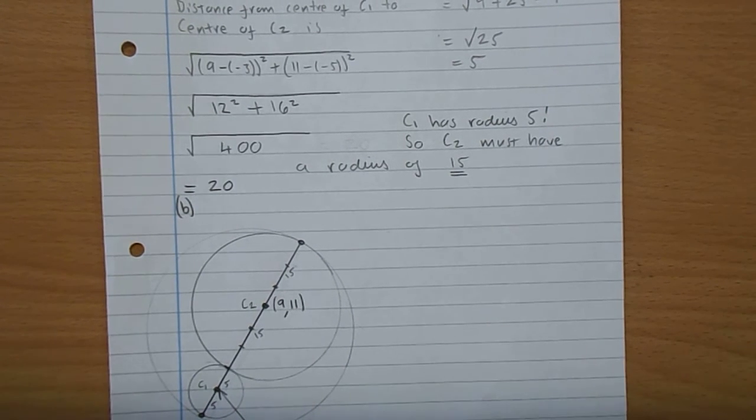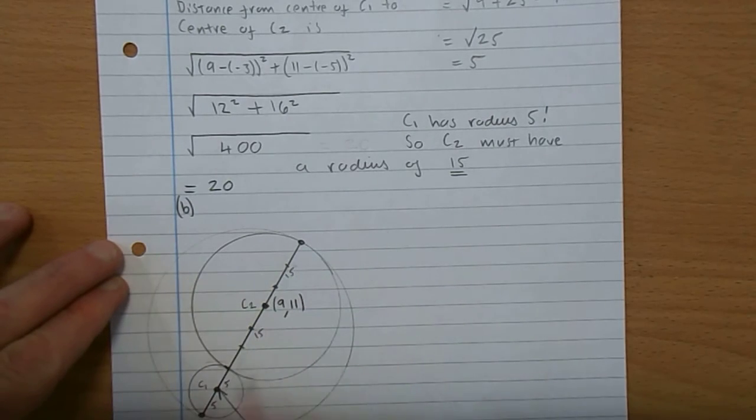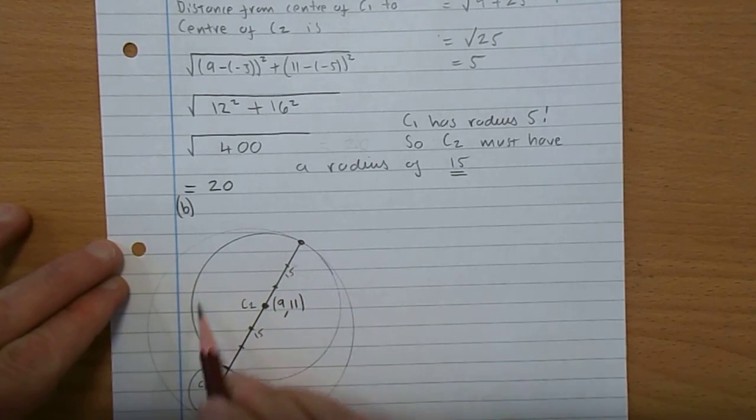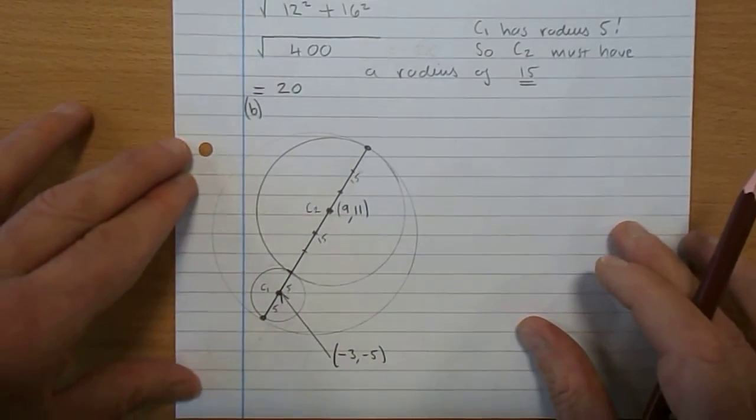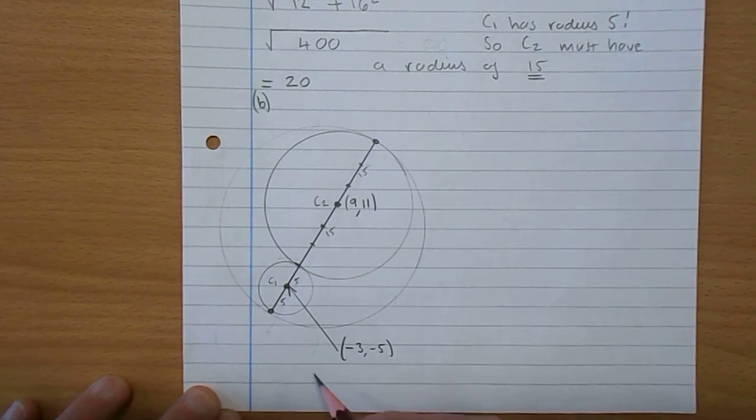Okay. Now, part B says, a third circle C3 is drawn such that both C1 and C2 touch C3 internally. That means that they touch this big circle from the inside of it. They're both inside it. So here's my diagram to represent what's happening there. There's C1,